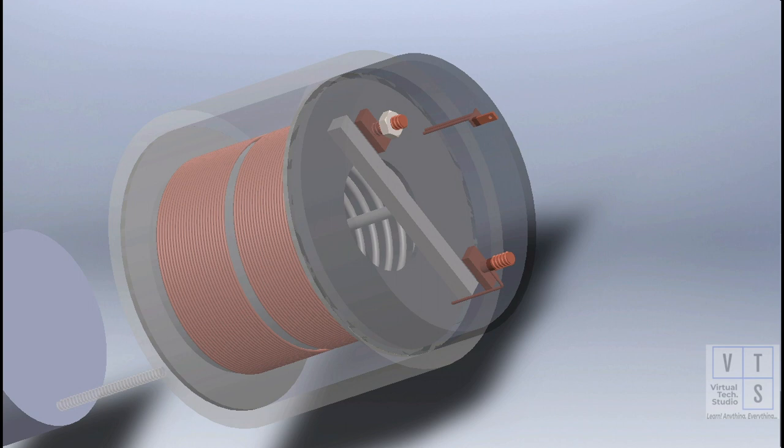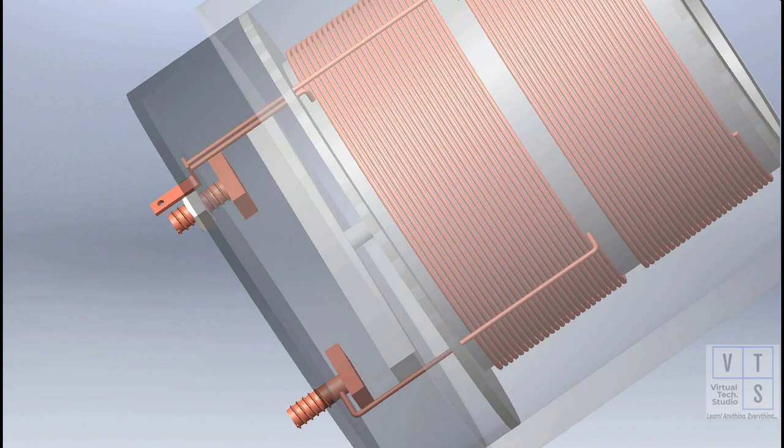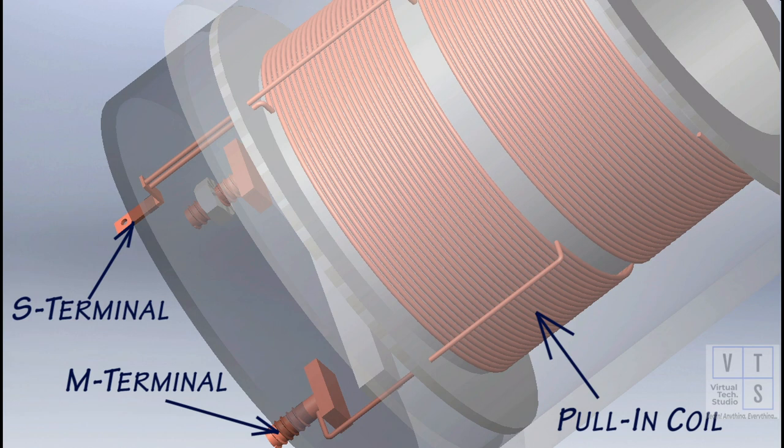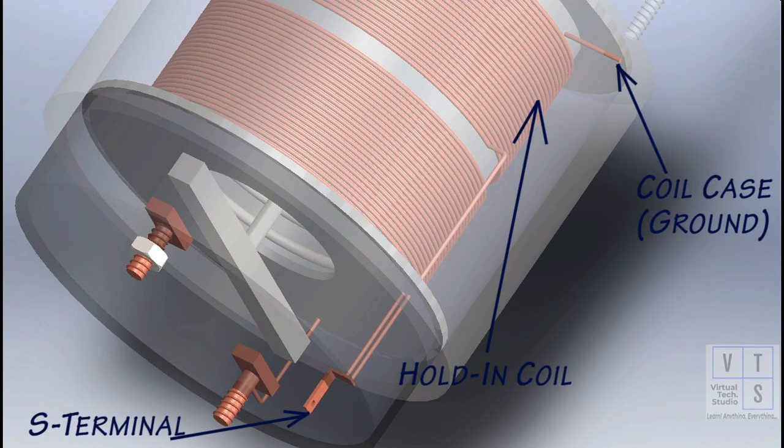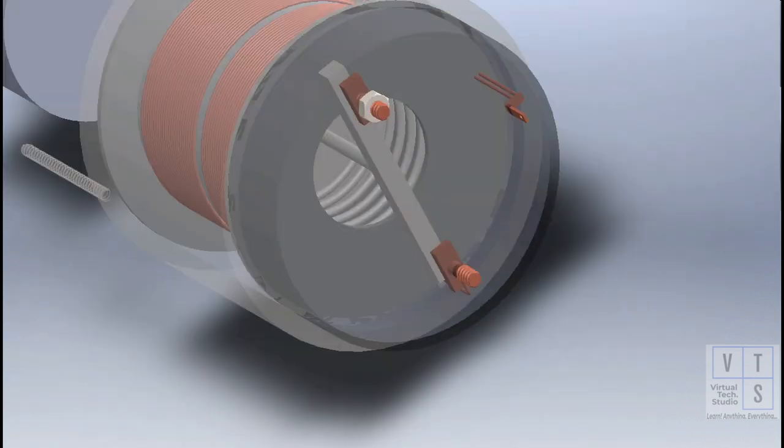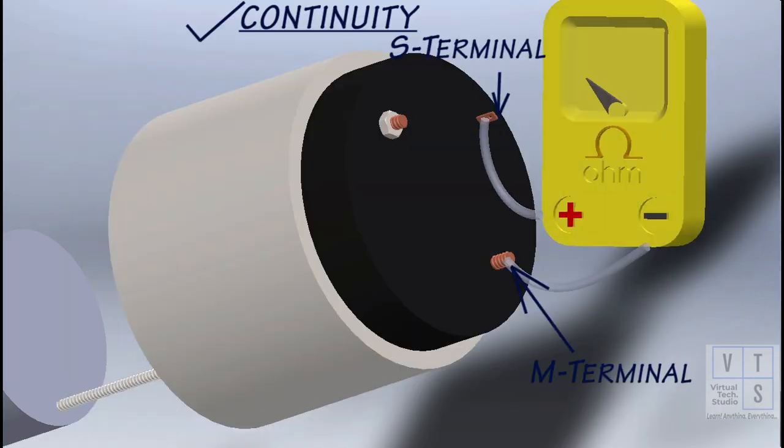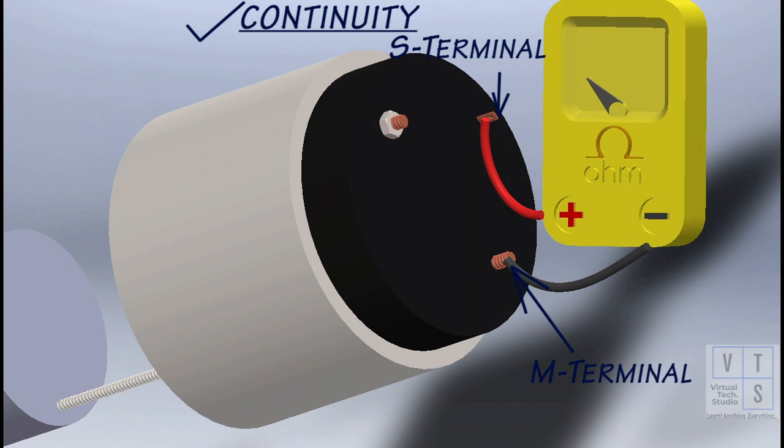There are two coils inside the magnetic switch: the pull-in and the hold-in coil. The pull-in coil connects between the S and M terminals. The hold-in coil connects between S terminal and ground through coil case. Check for continuity across magnetic switch S and M terminal. If no continuity exists, pull-in coil is open and should be replaced.